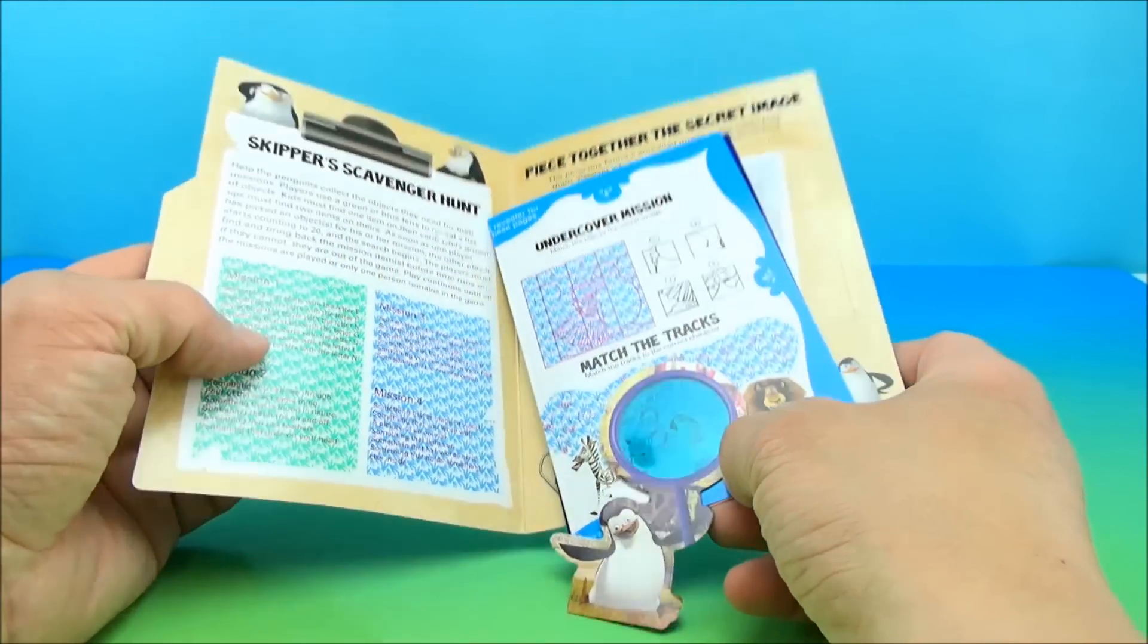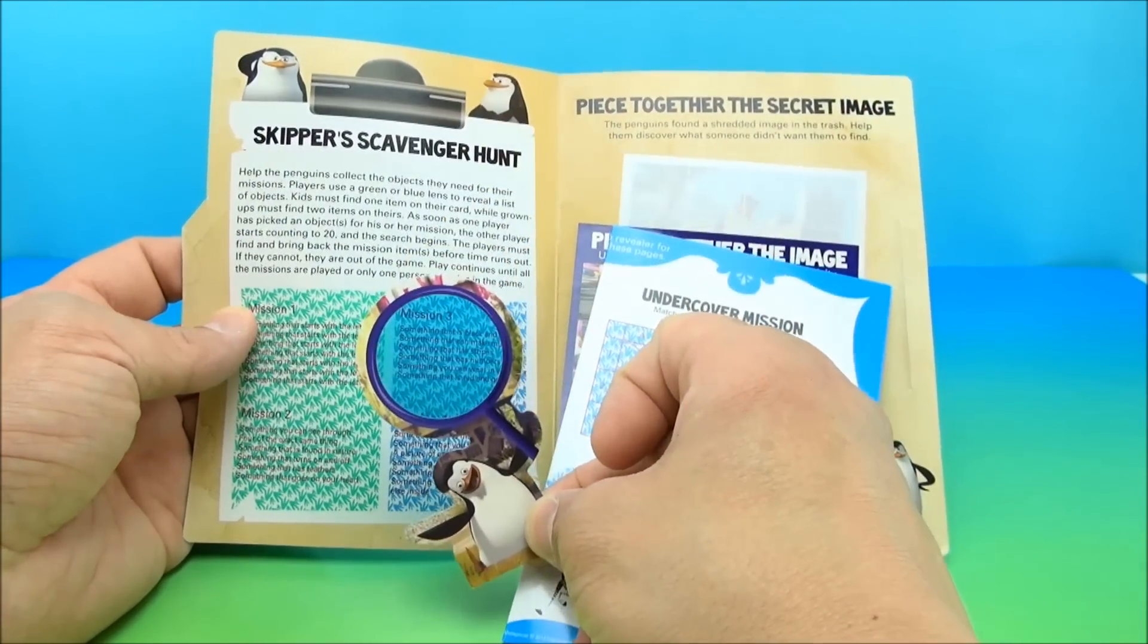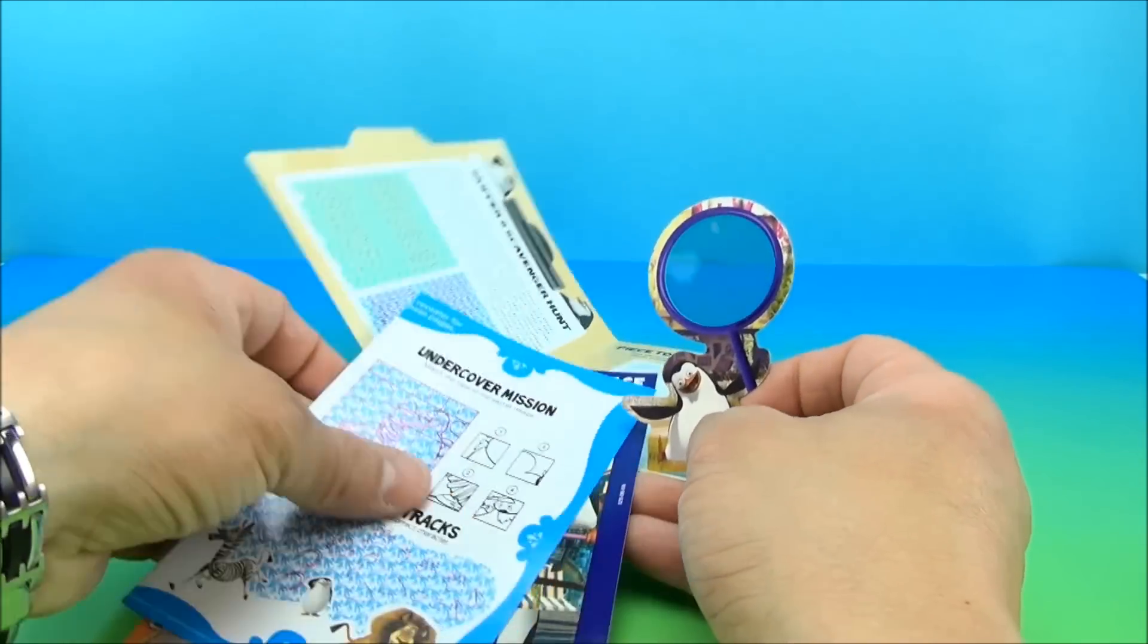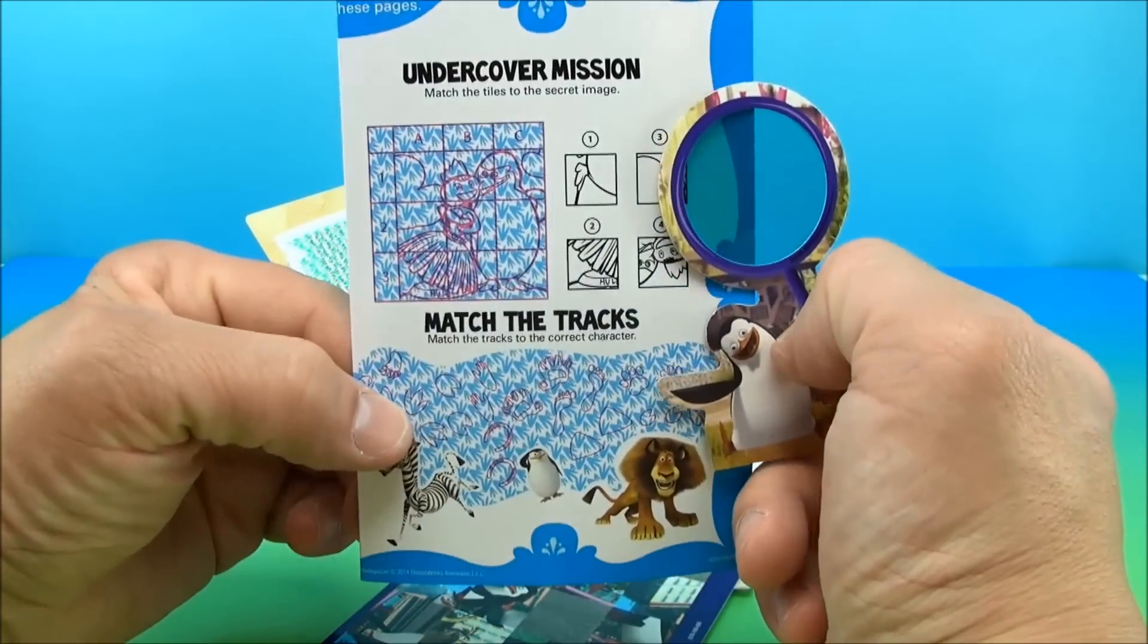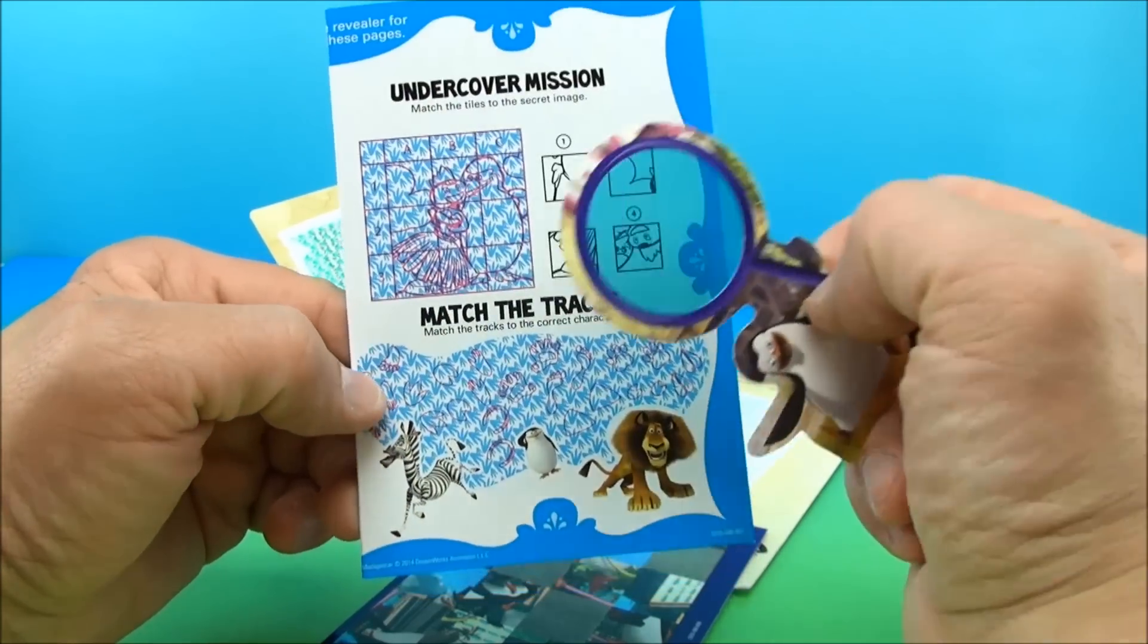Skipper's scavenger hunt challenge. You take a little Skipper, you get a little fun eyeglass, and then you go over this and now you can read some of the text that you couldn't before. You can see these pictures that are not even close to being able to be seen until you go like this. And now you can see them.